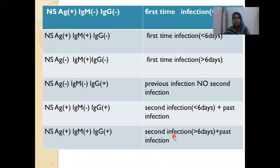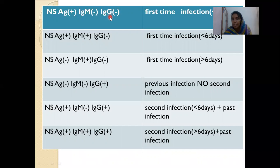Interpretation of serology results: If NS1 antigen is positive but both IgM and IgG are negative, this is a first-time infection and IgM has not yet developed, so fever duration is less than 6 days. If NS1 antigen and IgM are both positive but IgG is negative, this confirms a first-time infection with fever likely less than 5 days. If NS1 antigen is negative and only IgM is positive with IgG negative, it is still a first-time infection but NS1 has disappeared — fever is more than 5 to 6 days.